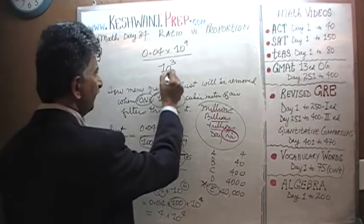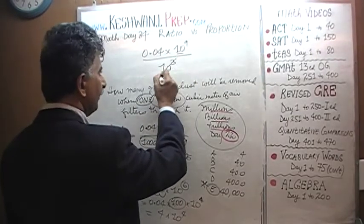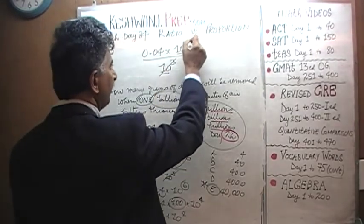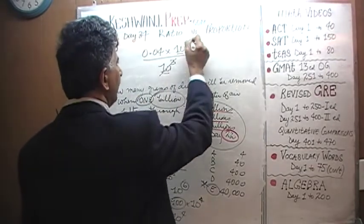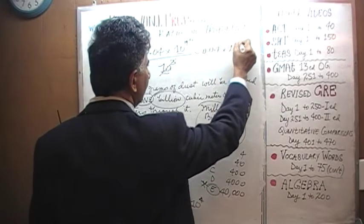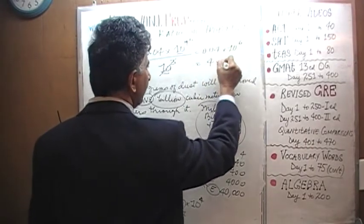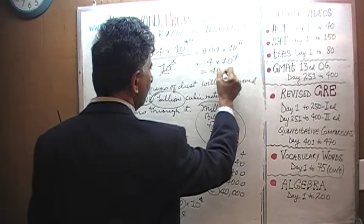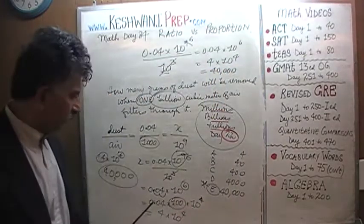Since they have the same basis, 10 and 10, we just subtract: 10 raised to 3 cancels out, it becomes 10 raised to 6. We subtract 3 from the 9, becomes 6. So it's 0.04 times 10 raised to 6, which is the same as 4 times 10 raised to 4, which is the same as 40,000. And that's what we did here.